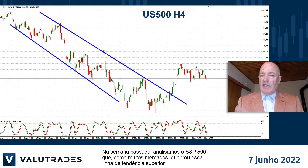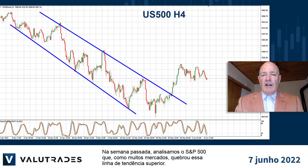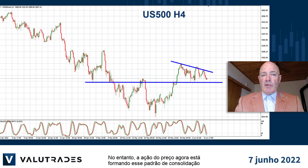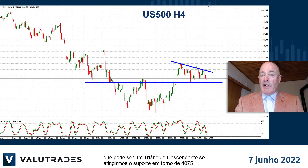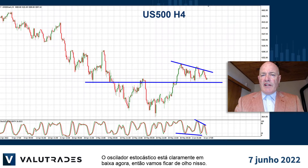Last week we looked at the S&P 500 which, like many markets, has broken this upper trend line. However, price action is now forming a consolidation pattern which could be a descending triangle if we reach support at around 4075. The stochastic oscillator is clearly bearish right now so we'll keep an eye on this.